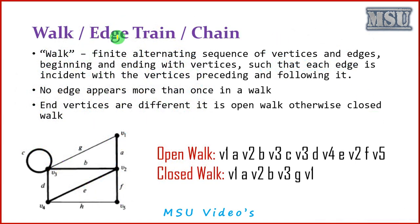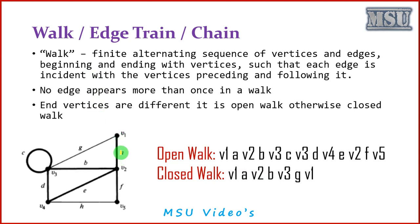A walk — it can also be called an edge train or a chain. It is a finite alternate sequence of vertices and edges, beginning and ending with vertices, such that each edge is incident with the vertices preceding and following it. In a walk, no edges are allowed to appear more than once. If the vertices are different, it is called an open walk; otherwise, it is called a closed walk.